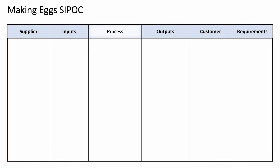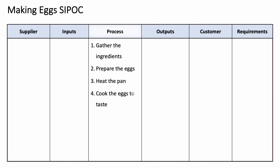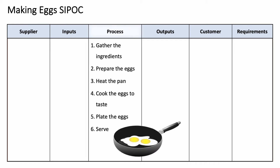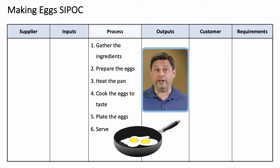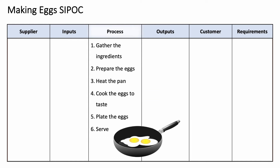Today we're going to talk about me making scrambled eggs for my daughter. I always begin with the actual process steps themselves, numbered in order of sequence. Every process has a definitive starting point, a definitive ending point, and steps that lead to an output. The process for making eggs is: first, gather the ingredients; second, prepare the eggs; third, heat the pan; fourth, cook the eggs to taste; fifth, plate the eggs; and sixth, serve the eggs. Since it's a high level, no details are needed — no measurements, no time constraints, just the actual steps.